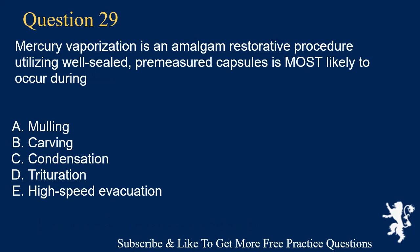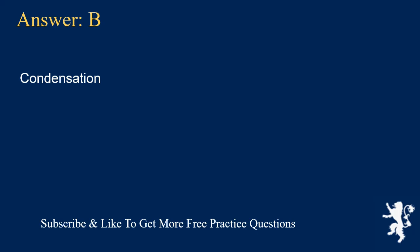Question 29. Mercury vaporization in an amalgam restorative procedure utilizing well-sealed, pre-measured capsules is most likely to occur during: A. Mulling, B. Carving, C. Condensation, D. Trituration, E. High-speed evacuation. Answer: B. Condensation.